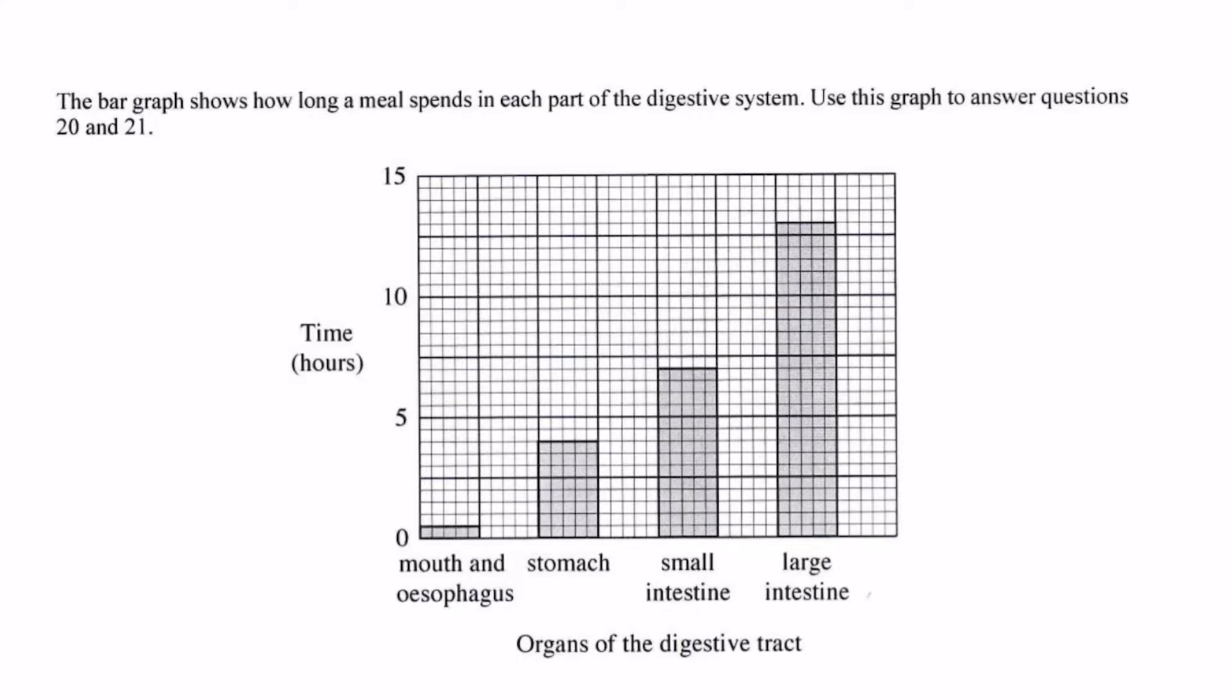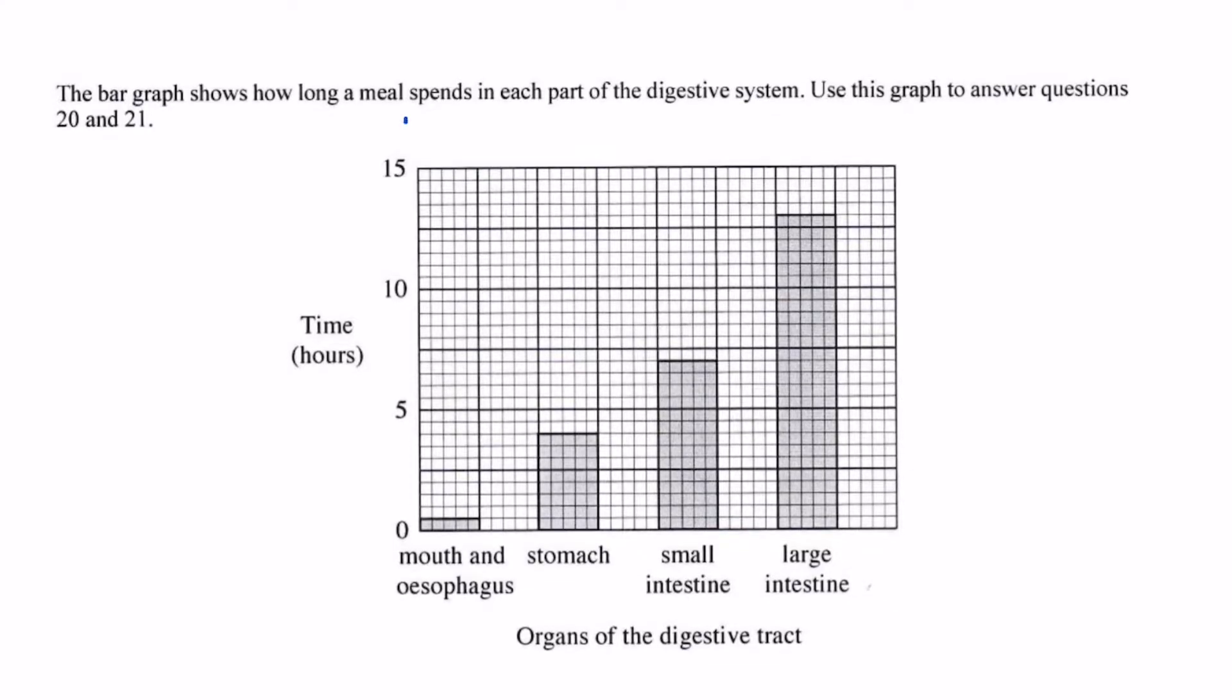So we'll take a look at the titles of the y-axis and the x-axis. On the y-axis the title is time and the time is given in hours and labeled on the x-axis are the organs of the digestive tract. And we've been told that this is a graph telling the time that a meal spends in different parts of the digestive system, including the mouth and esophagus, the stomach, the small intestine, and the large intestine.